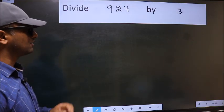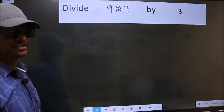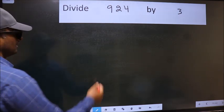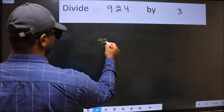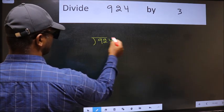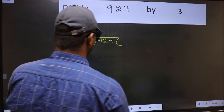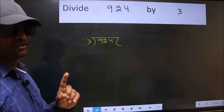Divide 9.24 by 3. To do this division, we should frame it in this way. 9.24 and 3 here. This is your step 1.